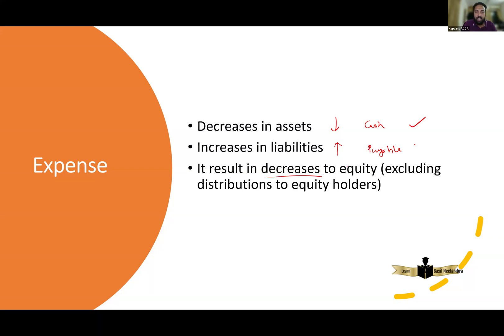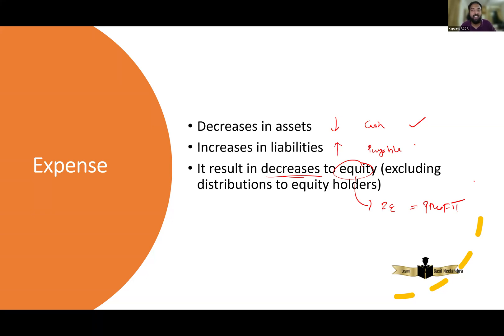Expense also results in a decrease to equity, excluding distributions to equity holders. Distribution means dividend — dividend is not an expense and will be deducted from retained earnings. An expense will cause a decrease to equity, meaning retained earnings, meaning profit. So expense is decrease in asset, increase in liability, or decrease in equity — that is decrease in profit and decrease in retained earnings.